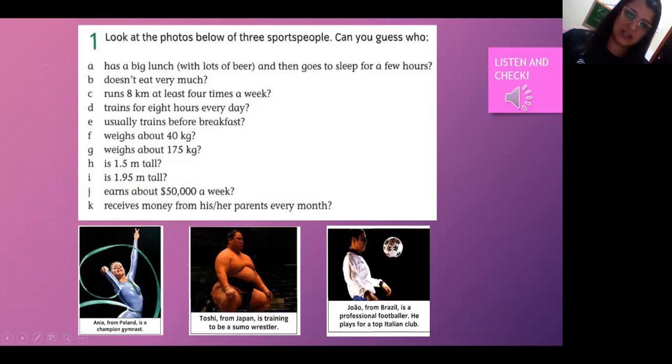First, one picture is from Anja, from Poland, and she's a champion gymnast. This is Toshi, he's from Japan, and he's training to be a sumo wrestler. And this is João, from Brazil, he's a professional footballer. He plays for a top Italian club. Now, think about these three people and guess.